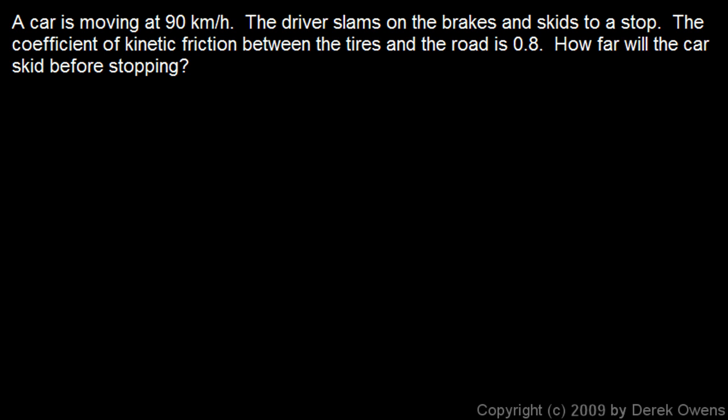A car is moving at 90 kilometers per hour. The driver slams on the brake and skids to a stop. So immediately we know this is the initial velocity, 90 kilometers per hour, and it skids to a stop, so the final velocity is zero. The coefficient of kinetic friction between the tires and the road is 0.8, and we want to know how far the car will skid before stopping.